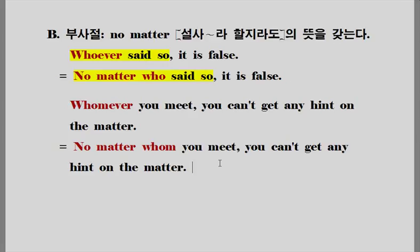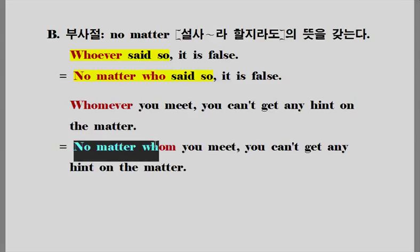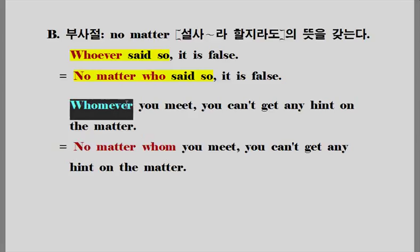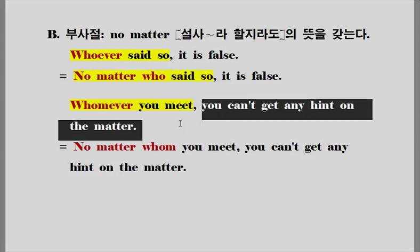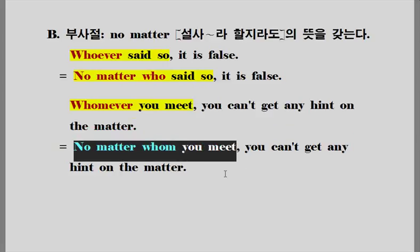두 번째 문장 보겠습니다. 'Whomever you meet, you can't get any hint on the matter.' 내가 어느 누구를 만난다 할지라도 너는 그 문제에 대해서 어떠한 힌트도 얻을 수 없다. 'whomever'가 쓰인 것은 'meet'라고 하는 동사의 목적어가 필요하기 때문에 목적격인 'whomever'가 쓰인 거죠. 'no matter whom'과 같습니다. 하나의 덩어리로 보세요. 그래서 부사절입니다.